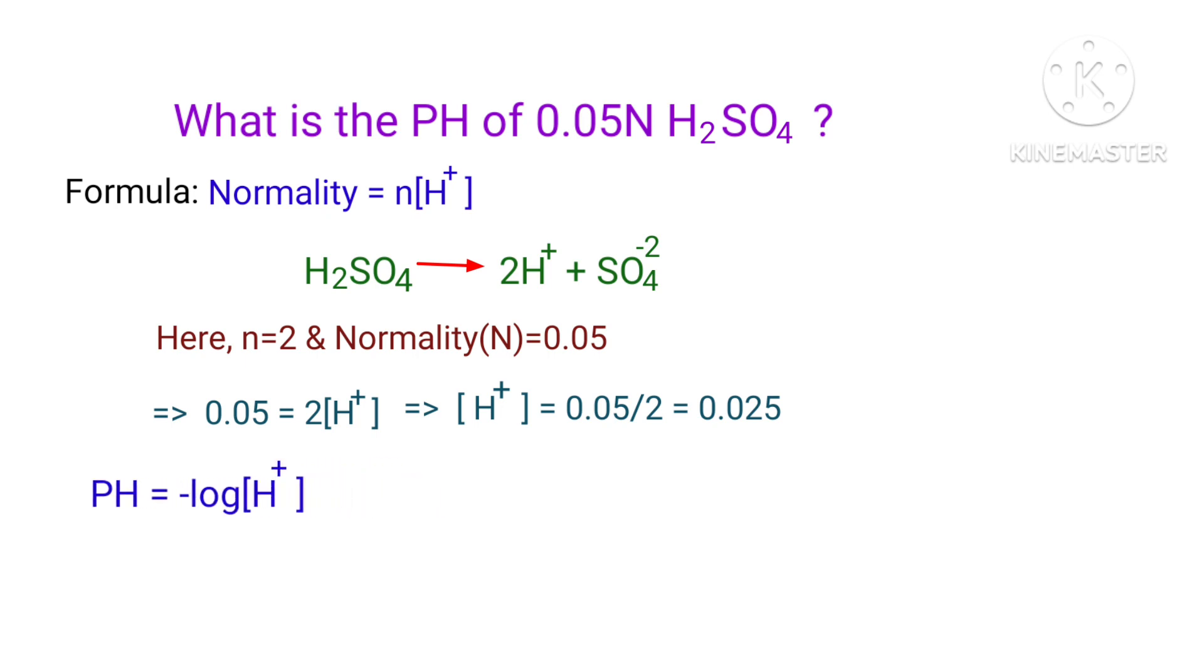pH equals minus log of H+, that equals minus log of 0.025, that equals minus of minus 1.6020, that equals 1.6. So pH equals 1.6.